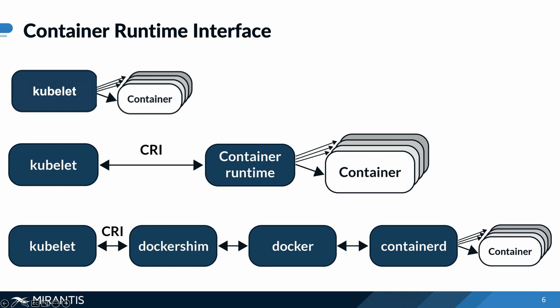The issue with Docker shim was that it was never meant to be a permanent solution — it was a stopgap. As a result, because it wasn't fully planned out, a lot of unnecessary complexity was introduced and some integrations were also inconsistently implemented. That's what led to the announcement of deprecation prior to version 1.20, the deprecation in 1.20, and the final removal in 1.24.